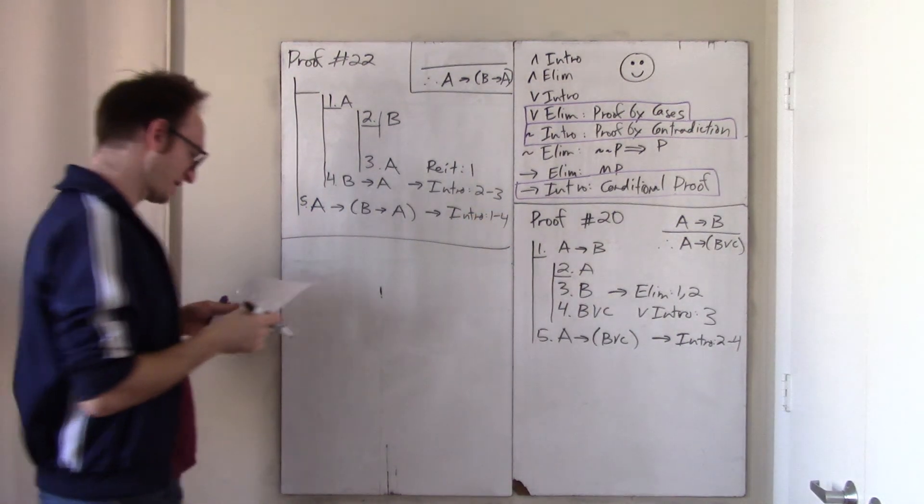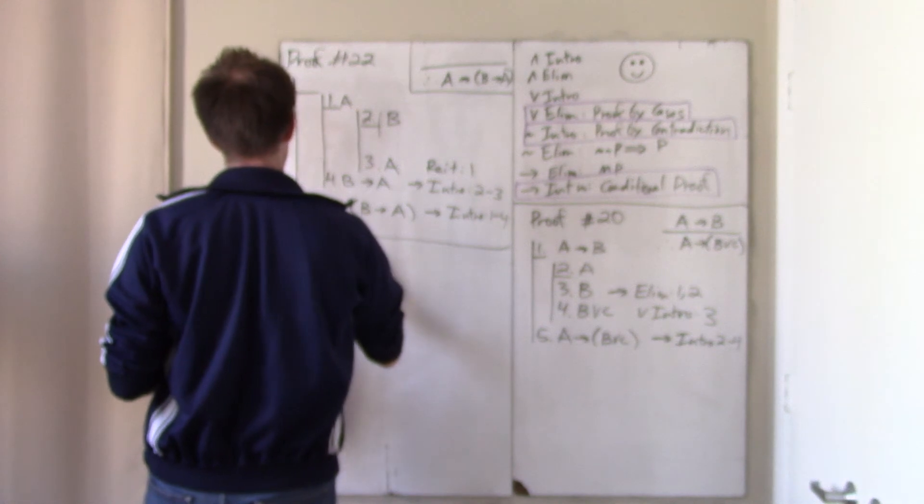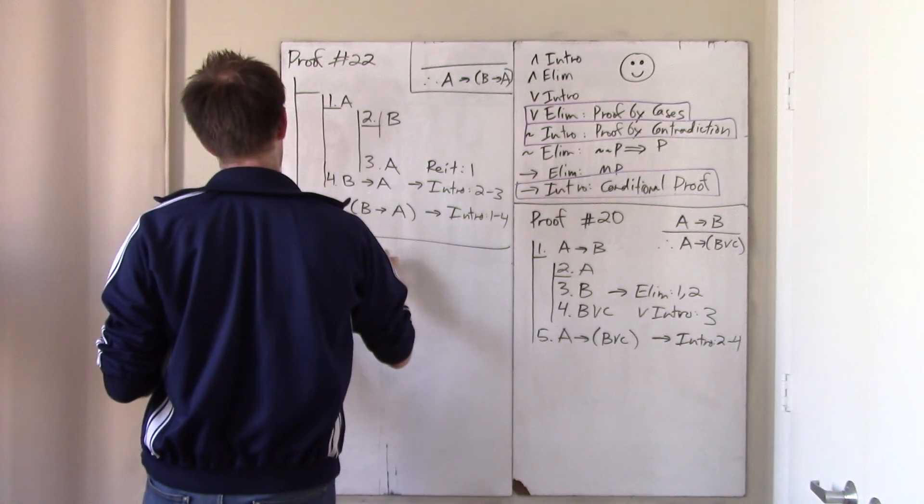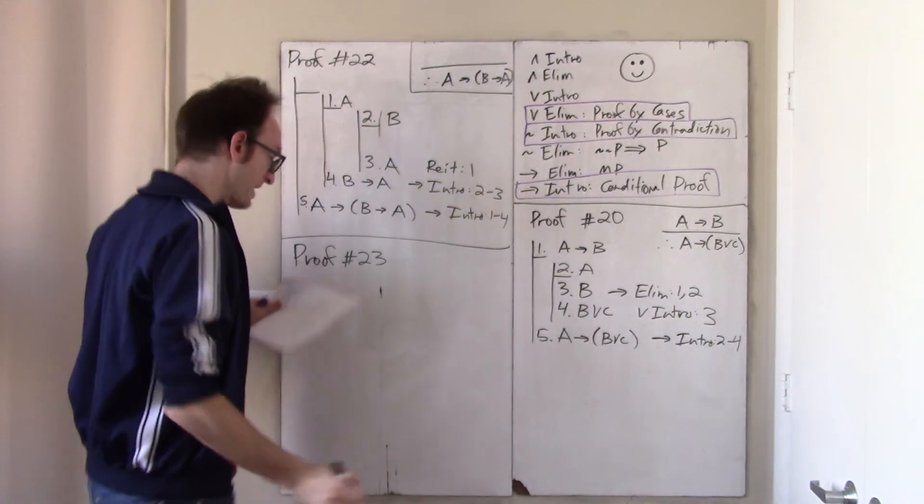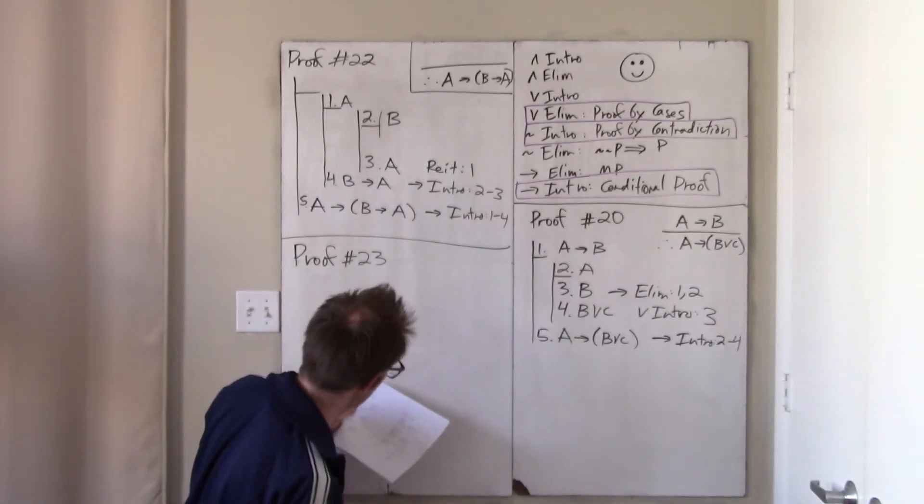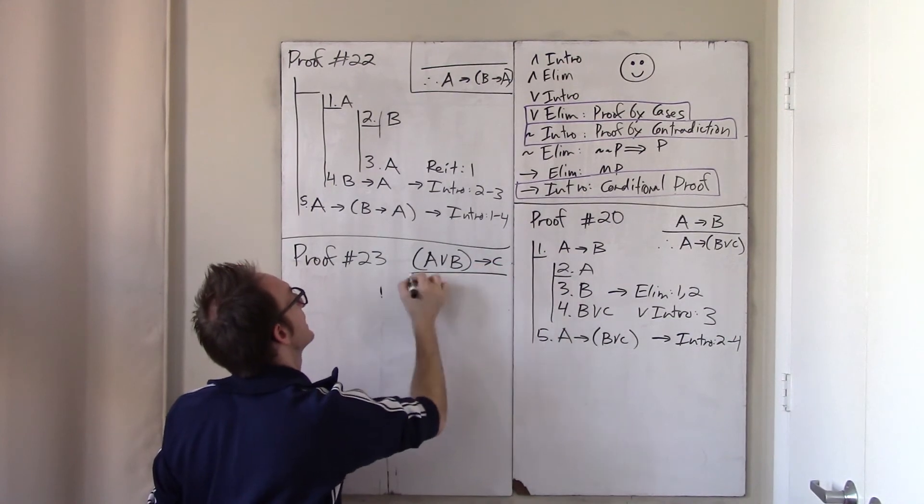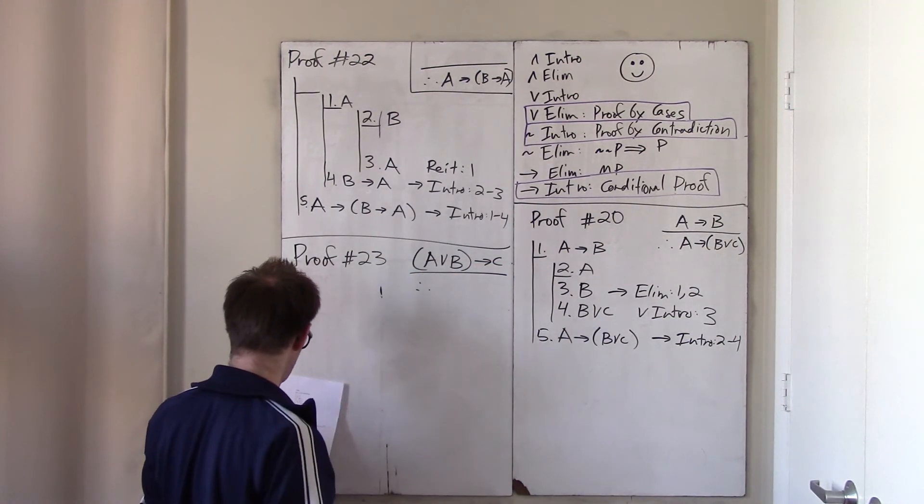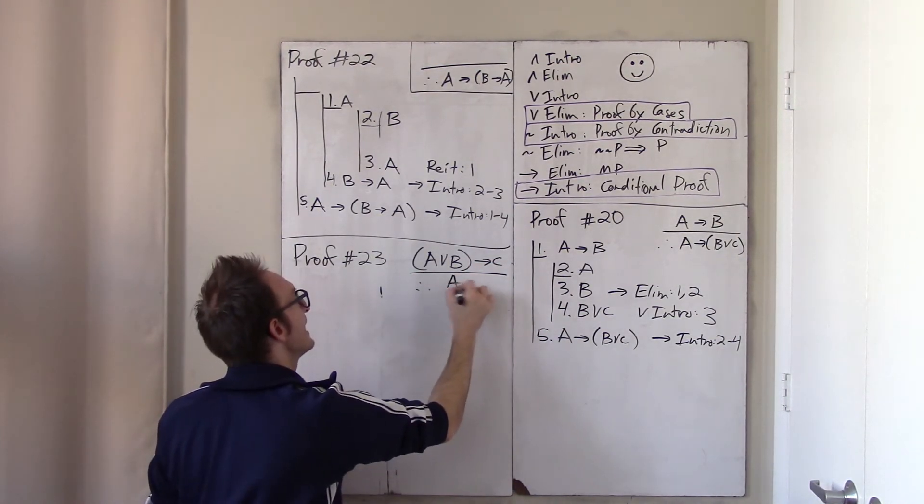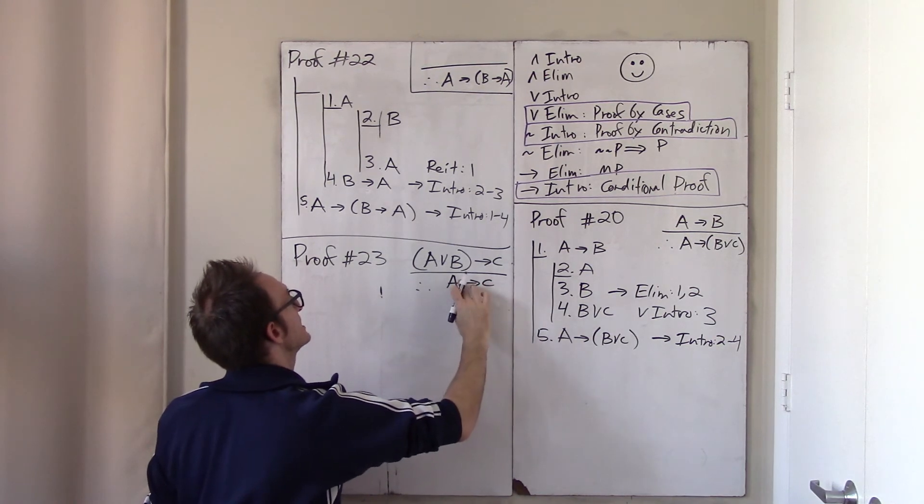Okay, and one proof left to go. Proof 23. We do it. What is it? It says from A or B implies C, I should conclude if A then C. Okay, this is nice because this goes in only one direction like this. But if this sort of weak information that A or B implies C,